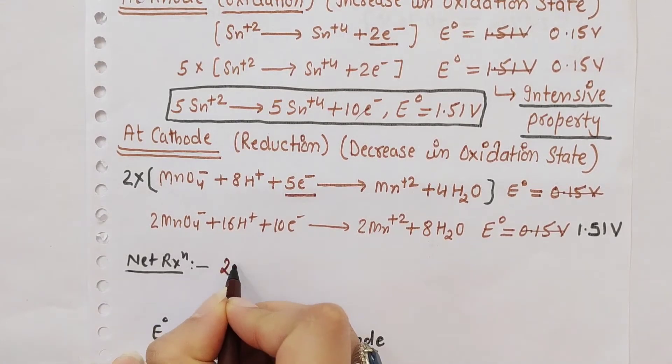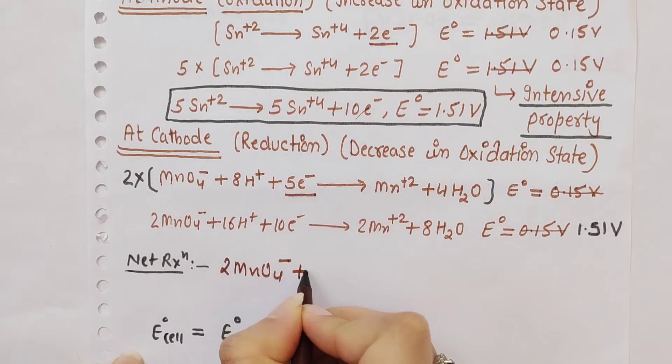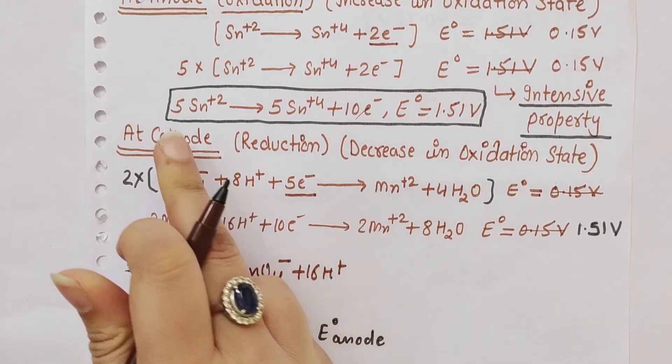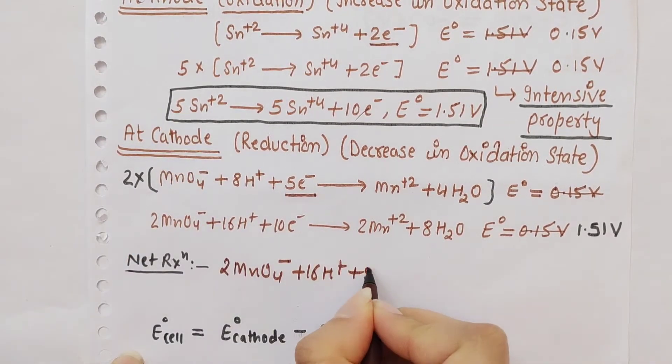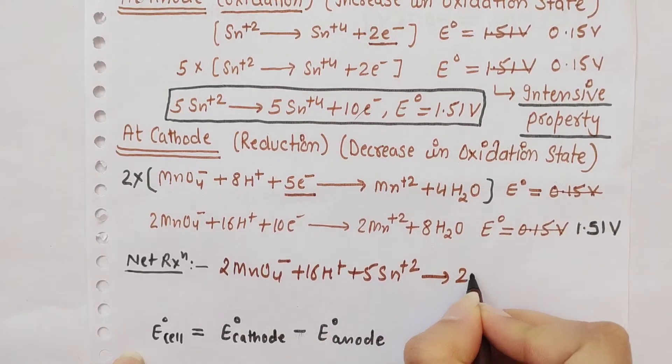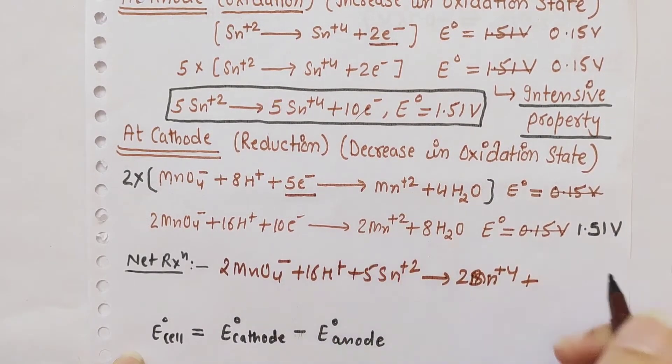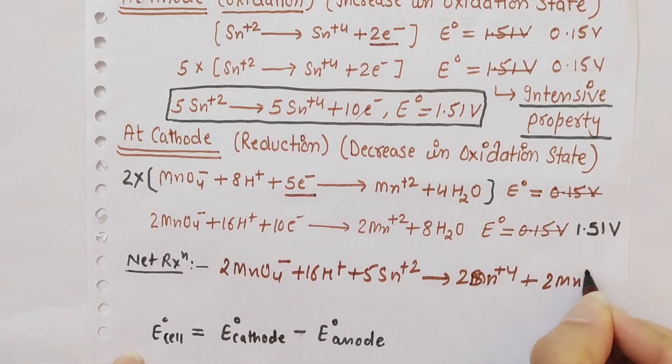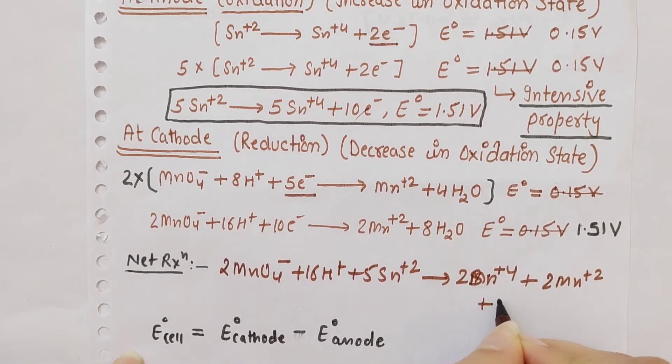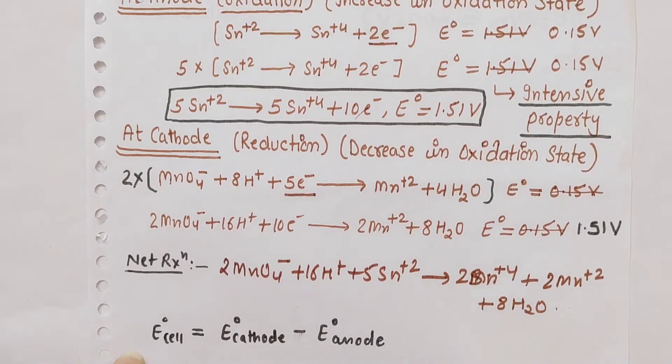This gives 2Mn²⁺ plus 5Sn⁴⁺ plus 8H₂O. This is our complete redox reaction.